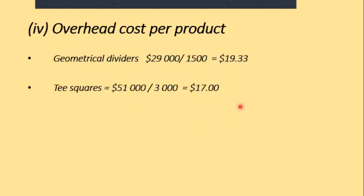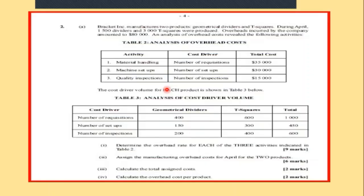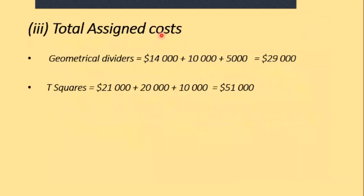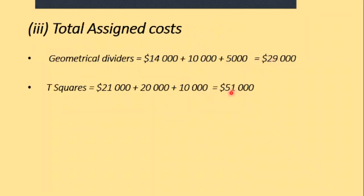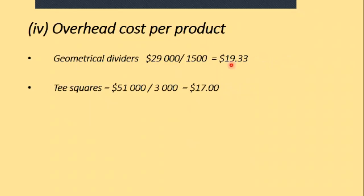I wasn't entirely sure what the last part was asking for, but I think it's actually the unit cost per product. To get that, we take the total cost we calculated and divide by the number of units. We had 1,500 geometrical dividers and 3,000 T-squares. So when we divide the total cost for each product by its unit count, we get the cost per product — the unit overhead cost per product.